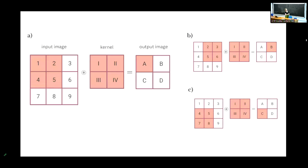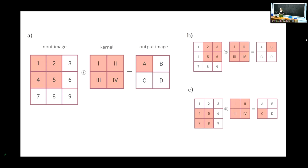As a quick reminder: how does a 2D convolution work? You have an input image and you convolve it with a kernel. It basically means you put the kernel on top of this input image — as shown by the colors — then you multiply all the elements, take the sum, and then you have the first output value of your output matrix. Then you slide with a certain stride — here the stride is 1 — so you slide to the right and get the next value, and then you go on.